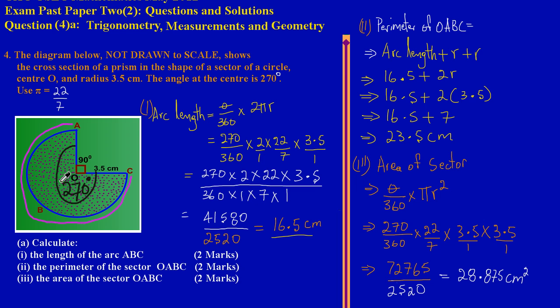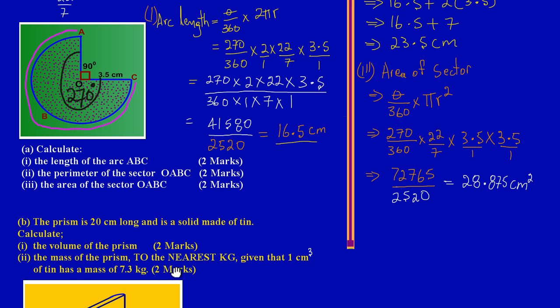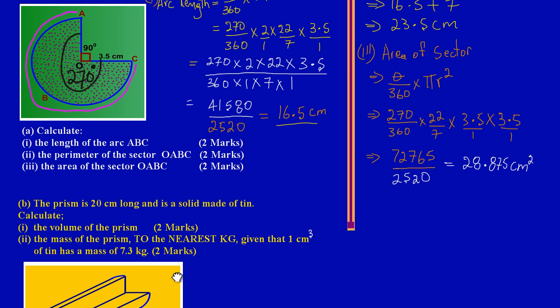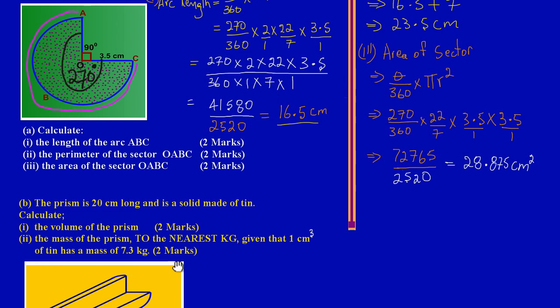This cross-section, this dotted region here, we had gotten that to be 28.875 centimeters squared. Now let's move on to part B of the question. Here it states the prism is 20 centimeters long and is a solid made of tin.